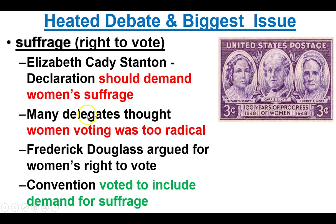Elizabeth Cady Stanton said yes, women should have suffrage — the right to vote, to be enfranchised, to have access to the political system and be able to vote. Some thought this was just a bit too radical. Frederick Douglass, abolitionist and former escaped slave from Maryland, said women should have the right to vote. In the end the convention voted to include the demand for suffrage.